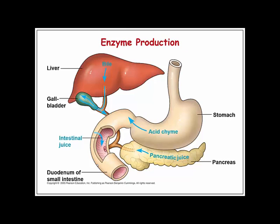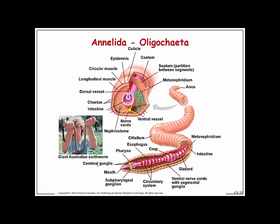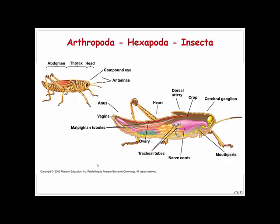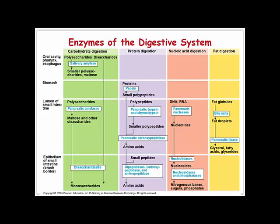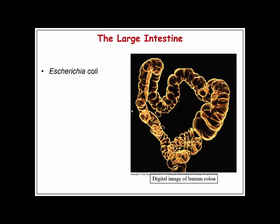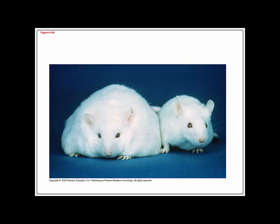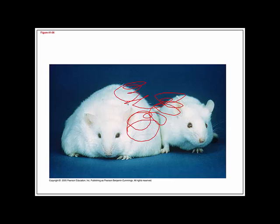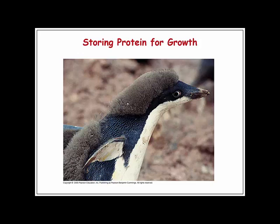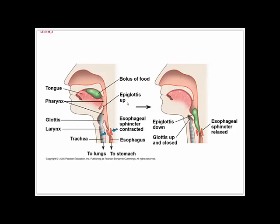The human digestive system is the primary focus of this course. Have a general idea of how the earthworm works as well. Know the basics of carbohydrate, protein, nucleic acid, and fat digestion. We'll talk about metabolism later, which can give us the difference between a fat mouse and a not-fat mouse.